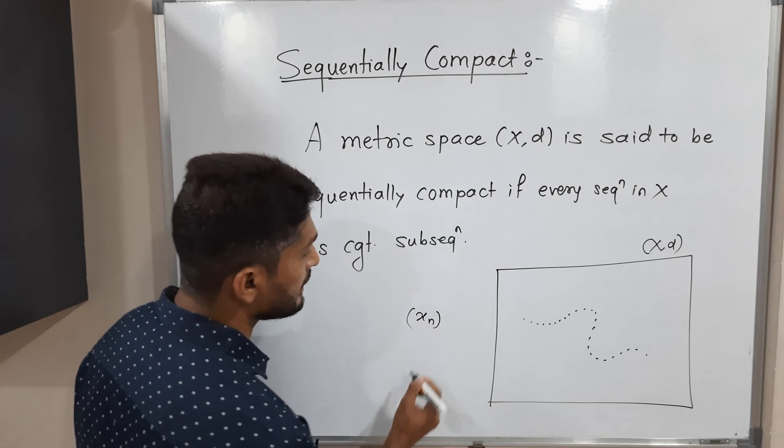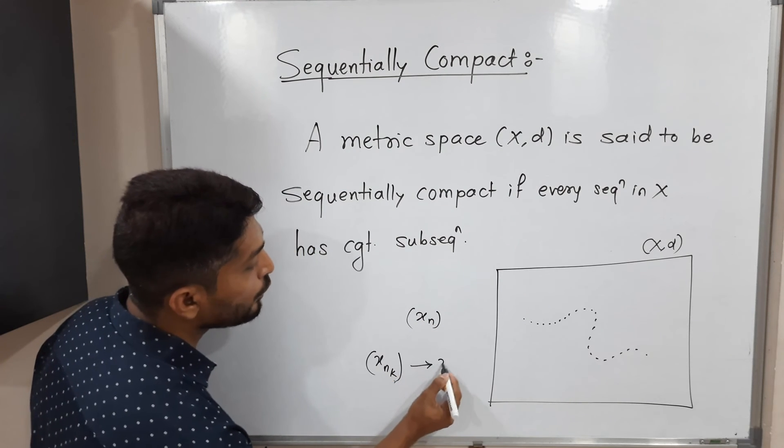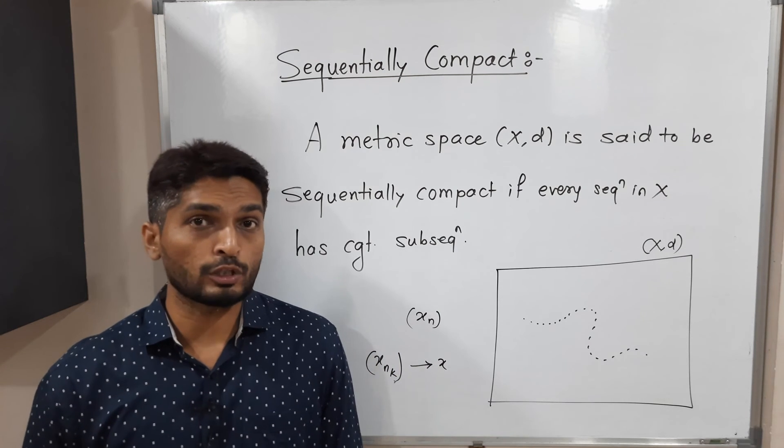So that means, if you take any sequence x_n, it should have some subsequence x_nk which converges to any fixed point. So then we say the metric space (X,d) is sequentially compact.